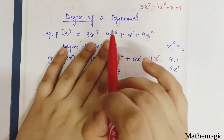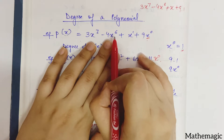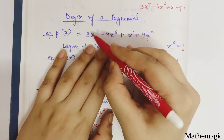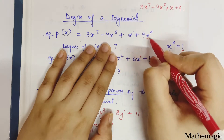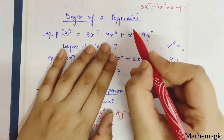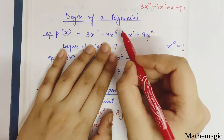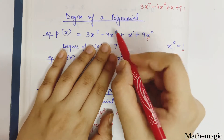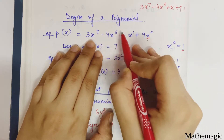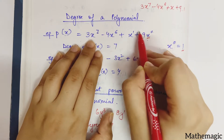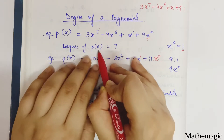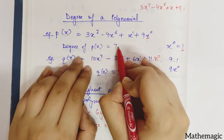To find the degree of a polynomial, we look at all the variables and find which one has the highest power — that will be the degree of the polynomial. In this example, the powers are 7, 6, 1, and 0. The highest is 7, so 7 is the degree of P(x).